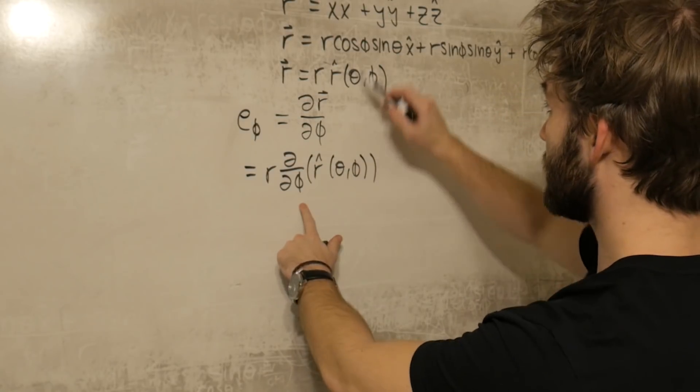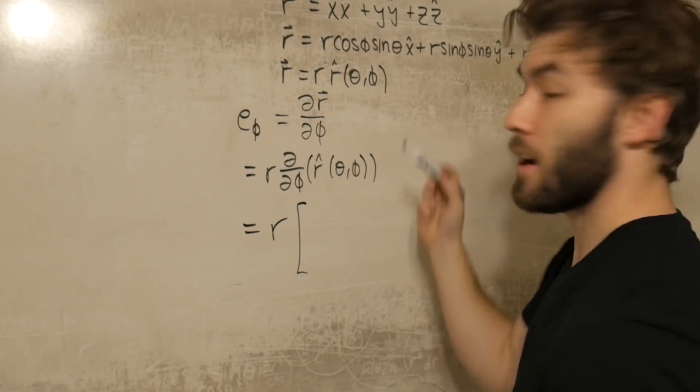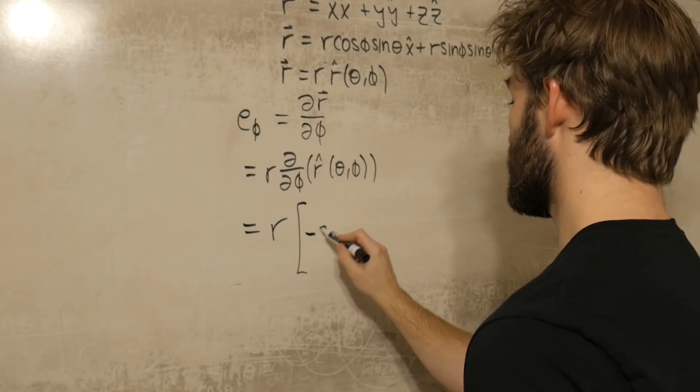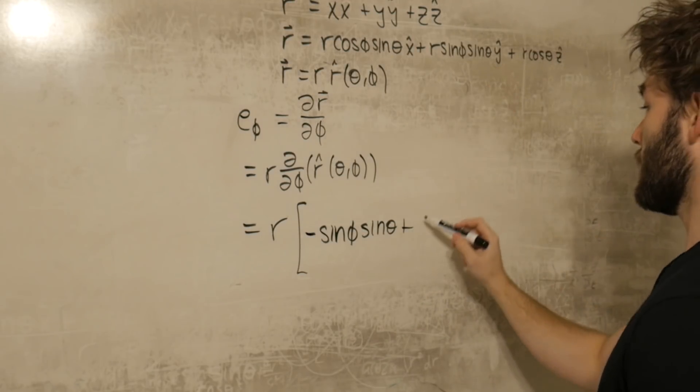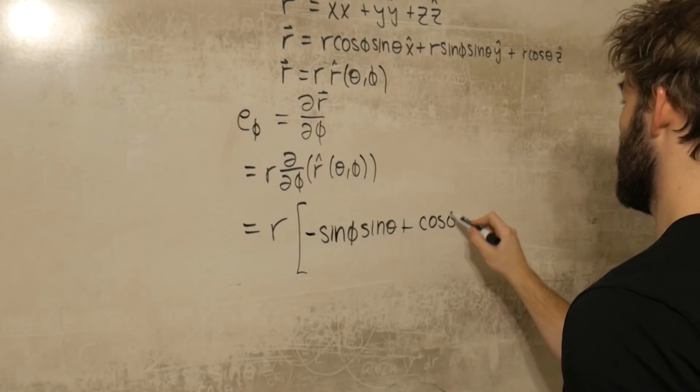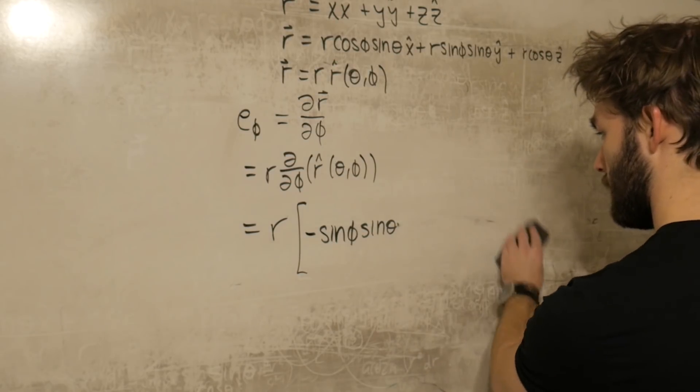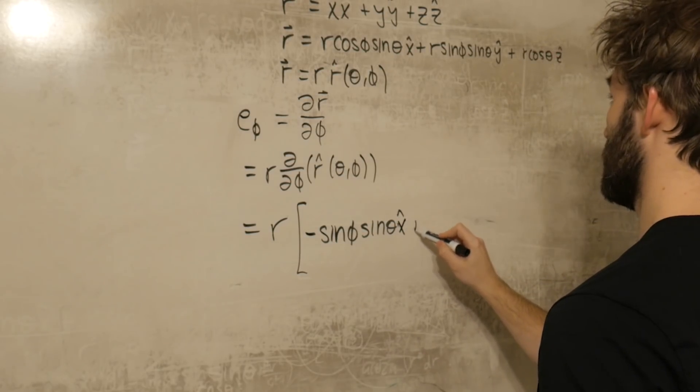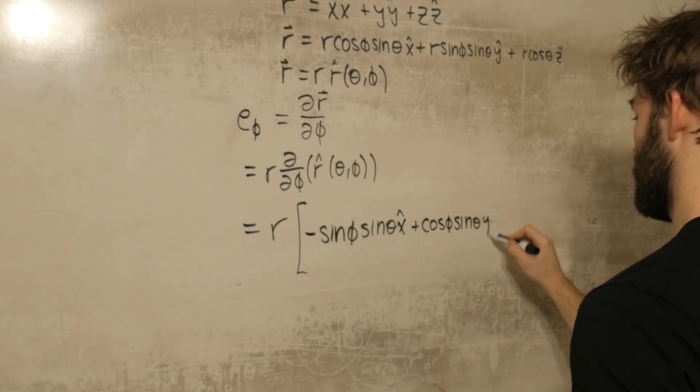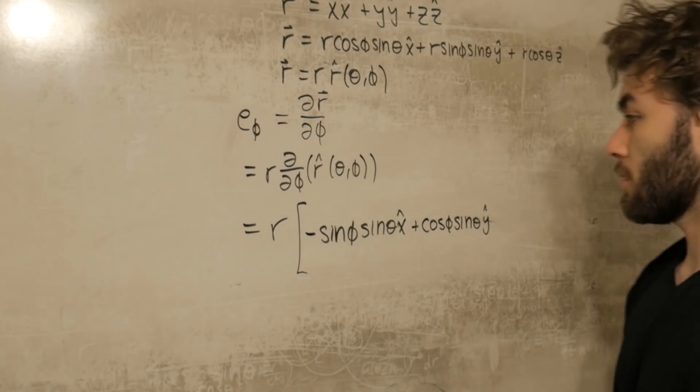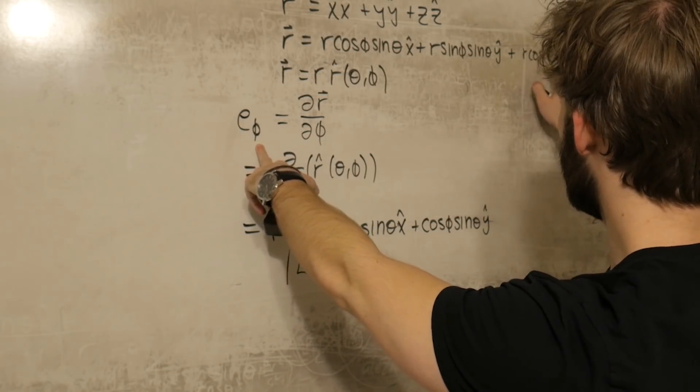So it's equal to r d d phi of r hat theta and phi. What this comes out to, if we take the derivative of the first term, I'm going to keep the r out front, the derivative of cosine phi with respect to phi is just going to be minus sine, so this is minus sine phi sine theta x hat plus, derivative of sine is just cosine, cosine phi sine theta y hat. And there's no phi dependence in the z component, so that tells you that the phi basis vector in spherical coordinates has no z dependence.